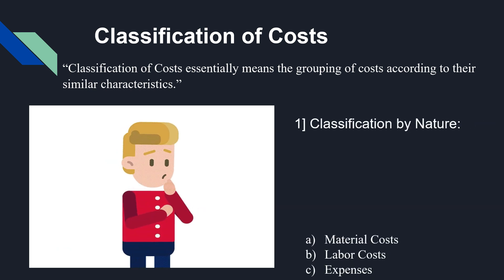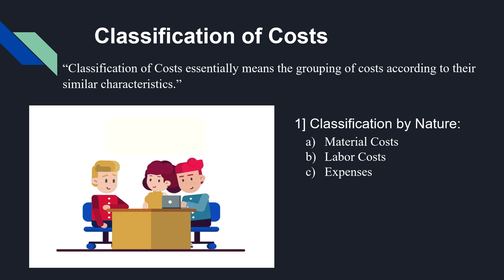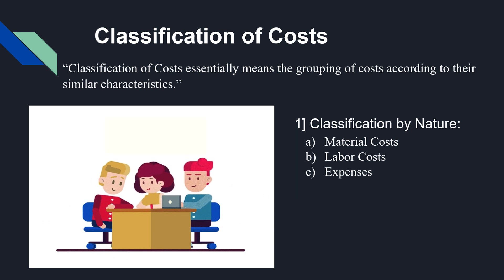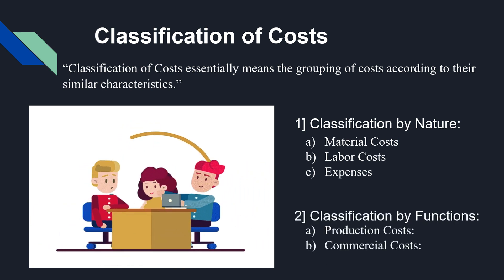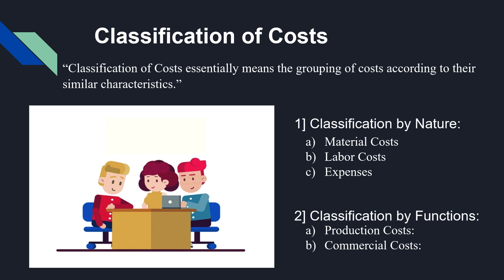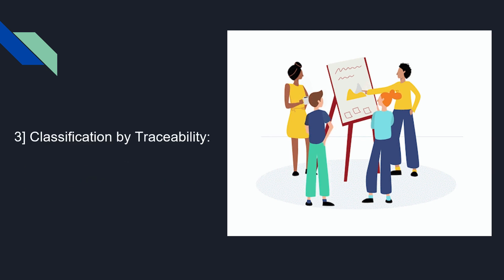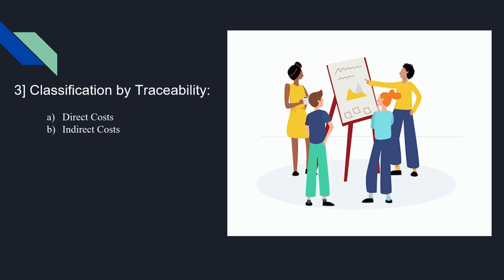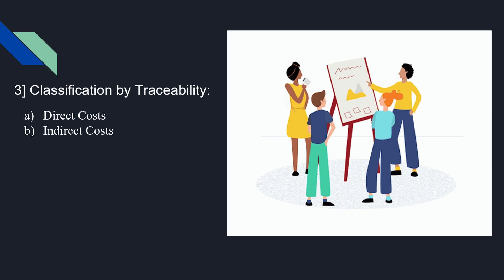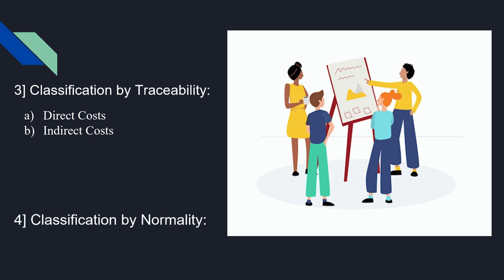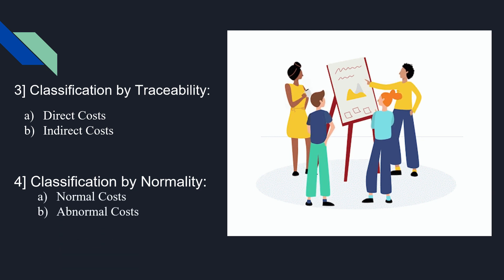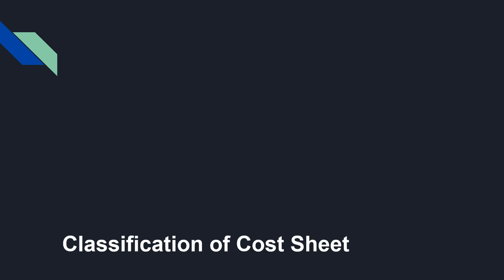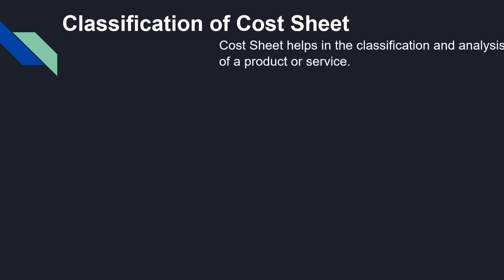Classification by nature includes Material costs, Labor costs, and Expenses. Classification by functions includes Production costs and Commercial costs. Classification by traceability covers Direct costs and Indirect costs. Classification by normality covers Normal costs and Abnormal costs.